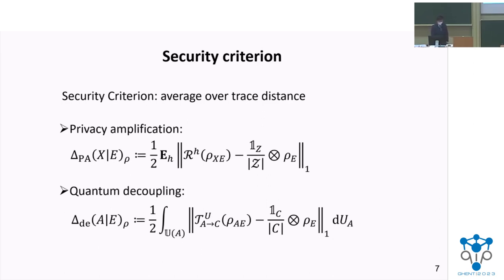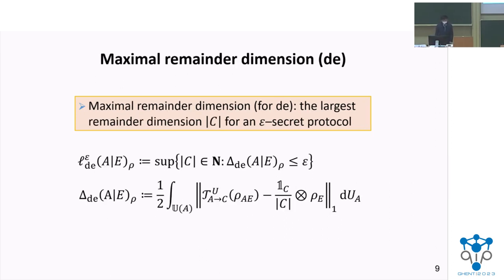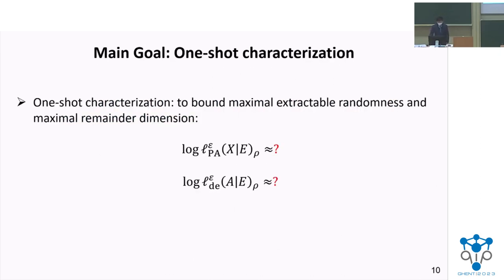For the security criterion, we average over the trace distance on both privacy amplification and quantum decoupling protocols to measure the closeness between the ideal state and the resulted state. For privacy amplification, we consider the maximal extractable randomness X, defined as the largest cardinality Z such that the error is smaller than epsilon. Similarly, for quantum decoupling, we define the maximal remainder dimension as the largest remainder dimension Z for an epsilon-secret protocol. The main goal of our work is to find the one-shot characterization for both the maximal extractable randomness and the maximal remainder dimension.